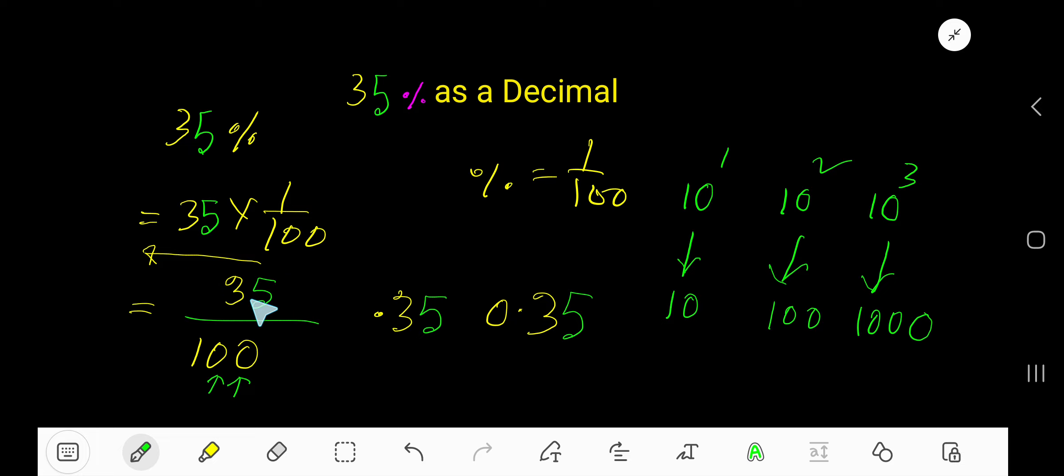Since this is a whole number, the decimal point will appear here. So one digit, two digits: point three five, or zero point three five. This is the result. We can add here another zero before the decimal to mean that this is less than one.